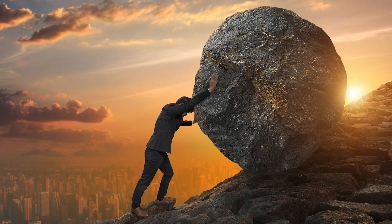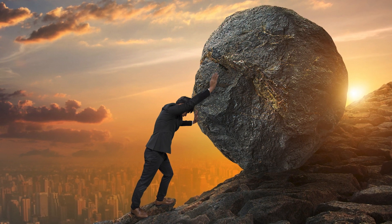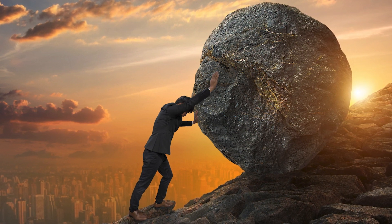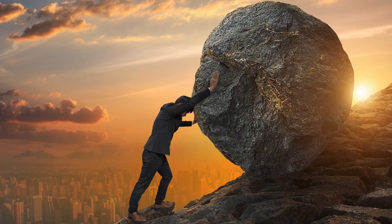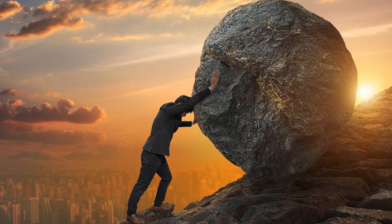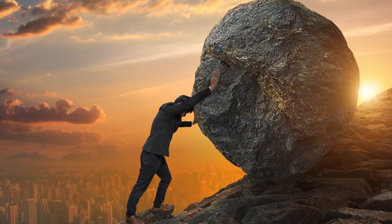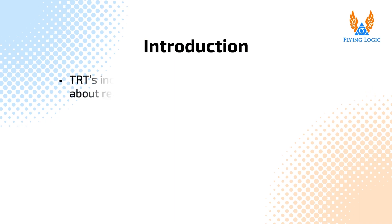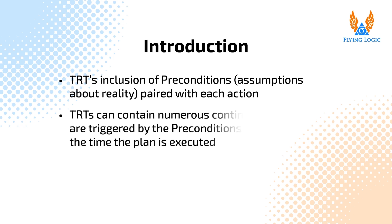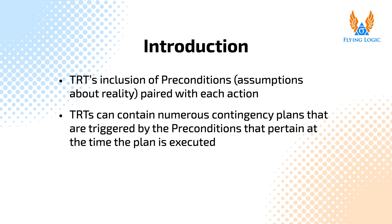The Transition Tree, or TRT, is an effective tool in creating an execution plan that creates a transition from the current reality to the future reality. Although a transition tree is related to the more traditional PERT diagram used in project management, in that they both contain a set of subsequent actions, one of their main distinctions is the transition tree's inclusion of preconditions — assumptions about reality — paired with each action. This means that transition trees can contain numerous contingency plans that are triggered by the preconditions that pertain at the time the plan is executed.